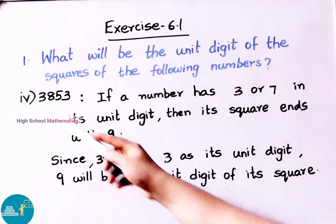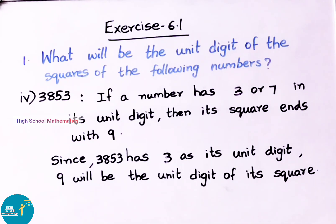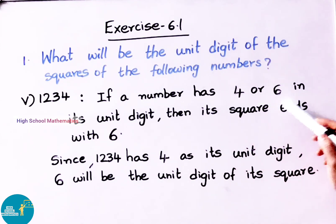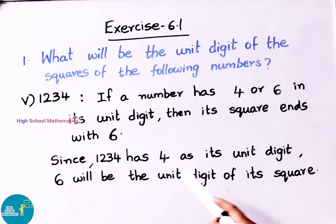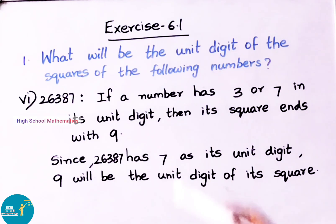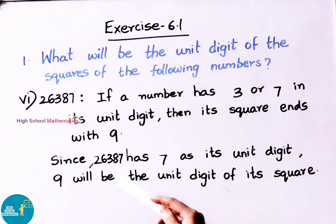See now the fourth sum — 3853. If a number has 3 or 7 in its unit's digit, then its square ends with 9. Since the number 3853 has 3 as its unit's digit, 9 will be the unit's digit of its square. See now the fifth question — 1234. If a number has 4 or 6 in its unit's digit, then its square ends with 6. Since the number 1234 has 4 as its unit's digit, 6 will be the unit's digit of its square. See now the sixth question — 26387. If a number has 3 or 7 in its unit's digit, then its square ends with 9. Since 26387 has 7 as its unit's digit, 9 will be the unit's digit of its square.